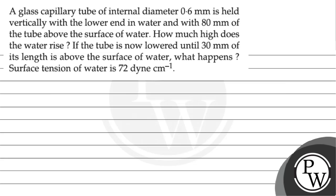Hello. So let's see the question. A glass capillary tube of internal diameter 0.6 mm is held vertically with the lower end in water and with 80 mm of the tube above the surface of the water. So how much high does water rise? And if the tube is now lowered until 30 mm of its length is above the surface of water, what happens?